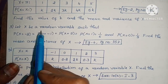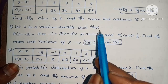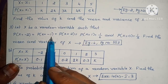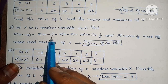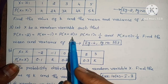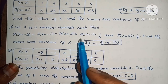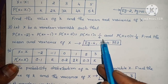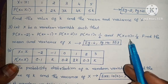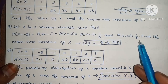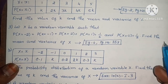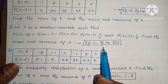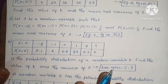Let x be a random variable such that P(x = −2) = P(x = −1) = P(x = 2) = P(x = 1) = 1/6, and P(x = 0) = 1/3. Find the mean and variance of x. Example 4, page number 353.